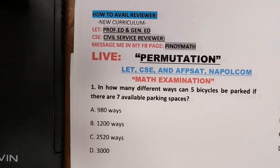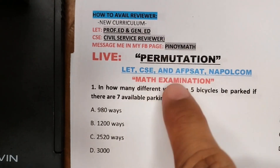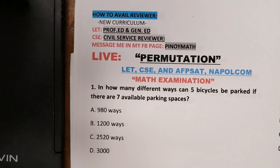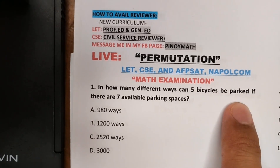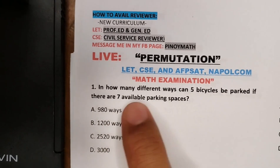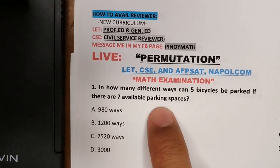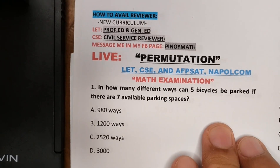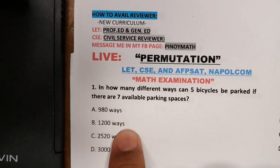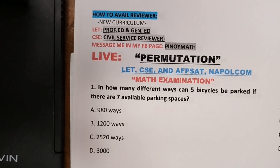So today's topic is all about permutation, which comes up in different kinds of examinations like LET, civil service, and local exams. Now the number one question is: in how many different ways can 5 bicycles be parked if there are 7 available parking spaces? You need to analyze the problem first, then choose from the given choices.